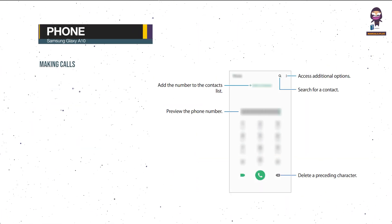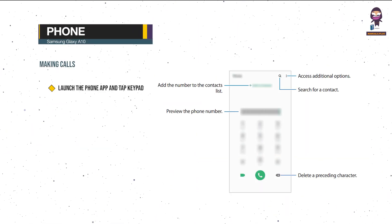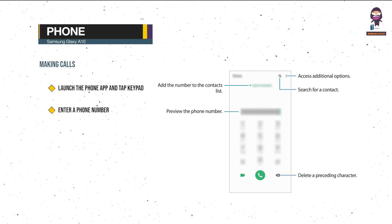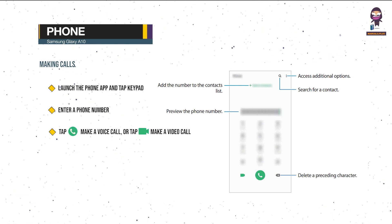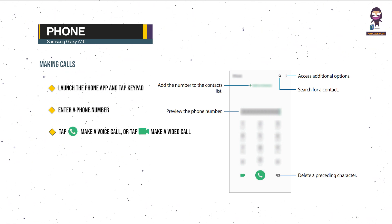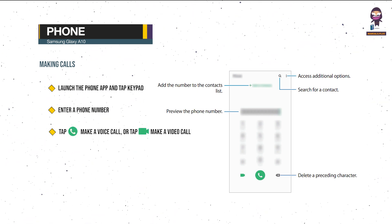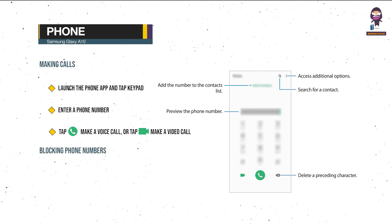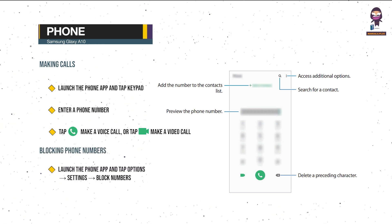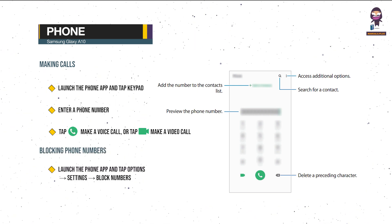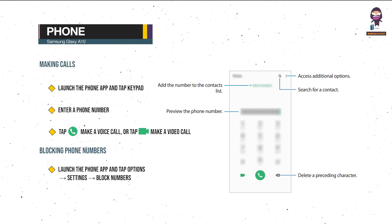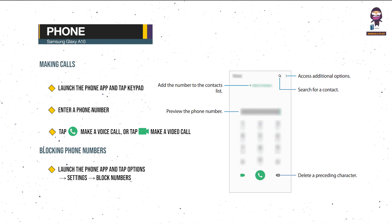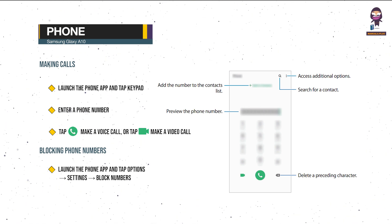Phone — Making calls: launch the Phone app and tap Keypad. Enter a phone number. Tap the Call icon to make a voice call, or tap the Video icon to make a video call. Blocking phone numbers: launch the Phone app and tap Options, Settings, Block Numbers. Tap Recents or Contacts, select contacts or phone numbers, and then tap Done.